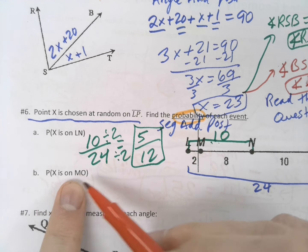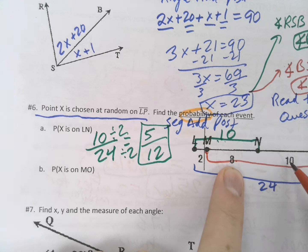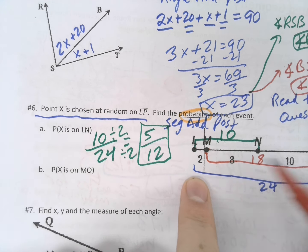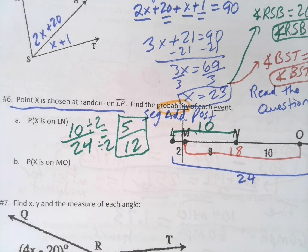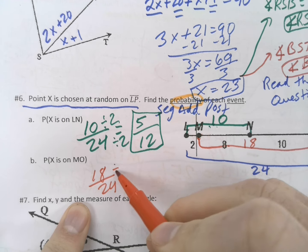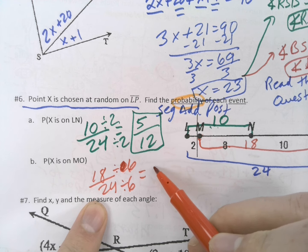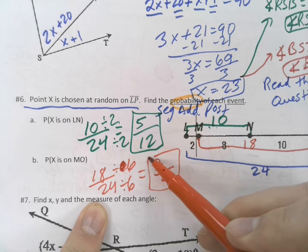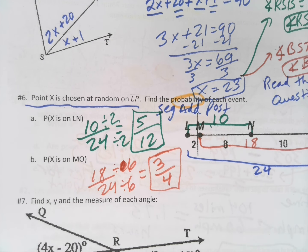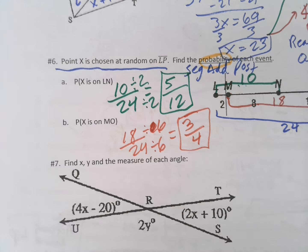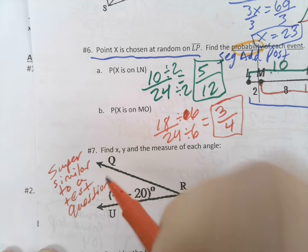How about this next one? The probability that X is on M0. M to O. M to O, that is 8 plus 10. So, that is 18 from there to there. What are the chances that if we drop a point, it lands somewhere in here? Well, that's 18 out of 24. That's even better odds. 18 out of 24, which again, if you divide by 2, and actually we can go bigger than that, let's divide by 6. 6 goes into 18, 6 goes into 24, gives you 3 over 4. You have a 3 out of 4 chance of dropping a point on this line and it landed somewhere between M and O. That's great odds. This is going to be a problem we see very, very similar, crazy similar, super similar to a test question.